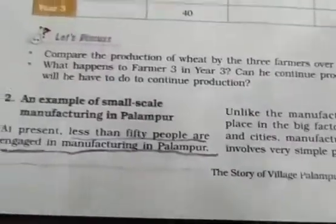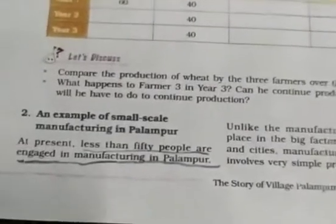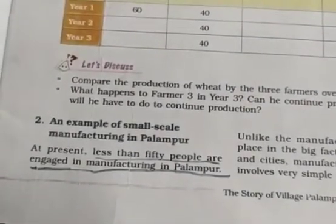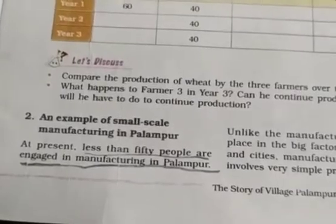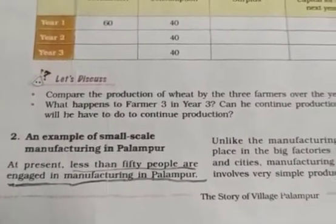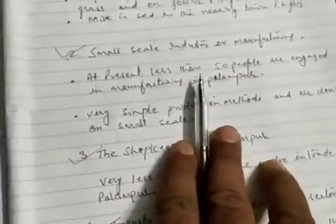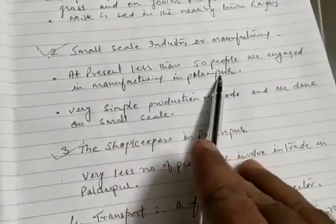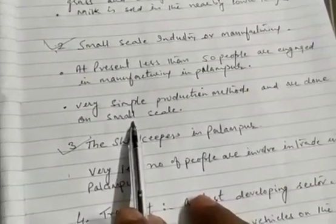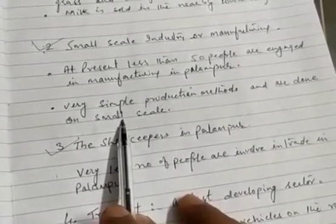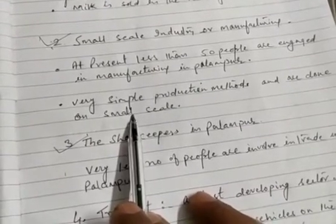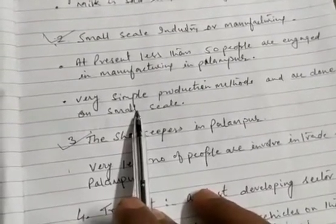The second important non-farm activity is small-scale manufacturing. Less than 50 people are engaged in manufacturing in Palampur. Unlike the manufacturing which takes place in big cities or towns, manufacturing in Palampur involves very simple production methods and is done on a small scale.